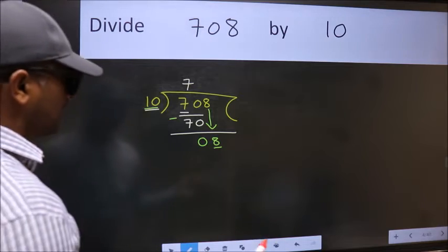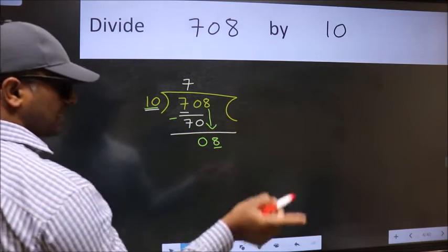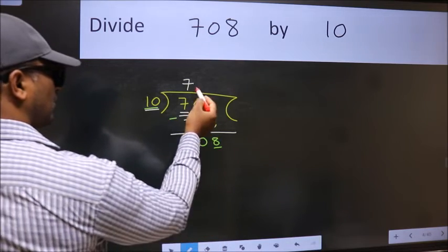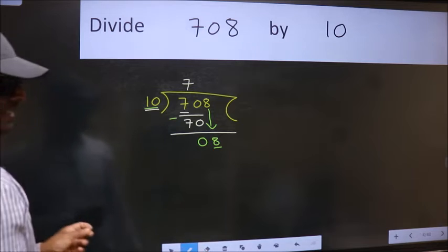Why is it wrong? Because just now you brought this number down. And in the same step, you want to put dot, take 0. Which is wrong.